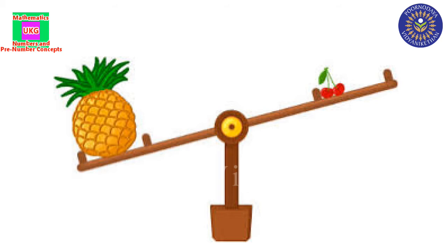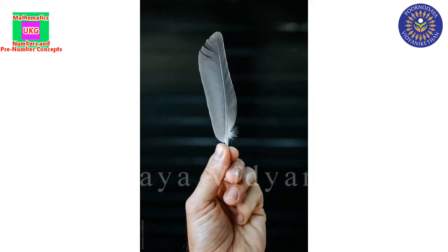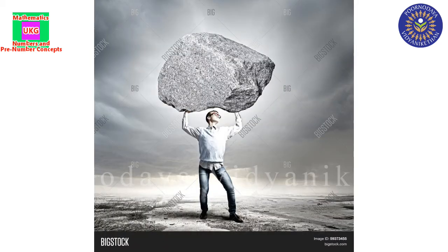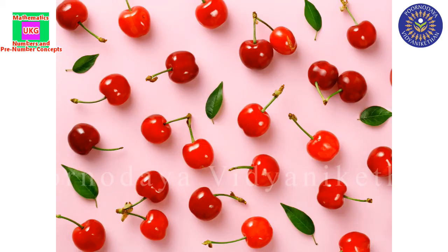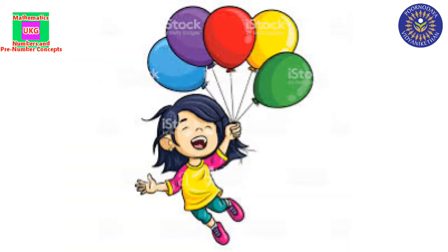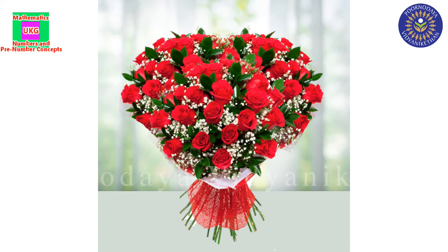For example, a feather is too light but a stone is heavy. Similarly, a watermelon is heavy but a cherry is light. A football is heavy but a balloon is light. A flower is light but a bouquet is heavy.